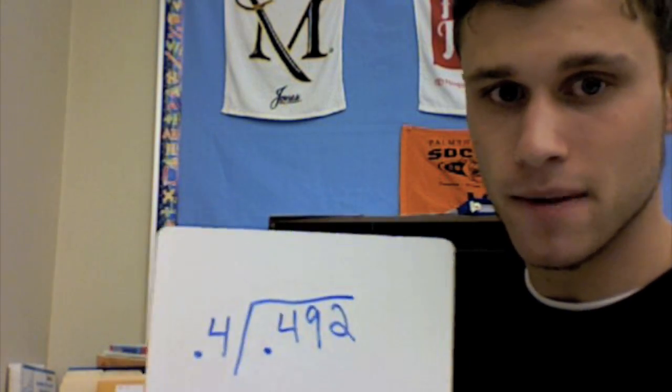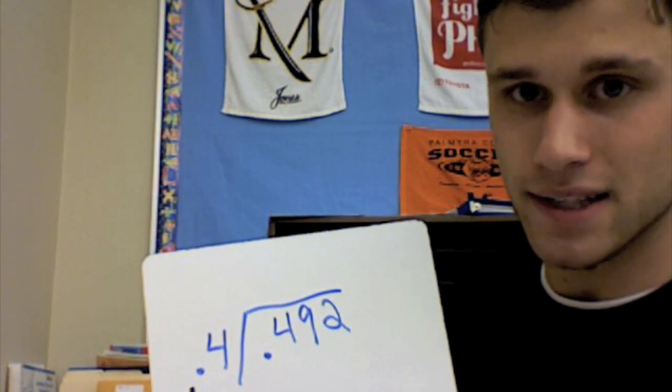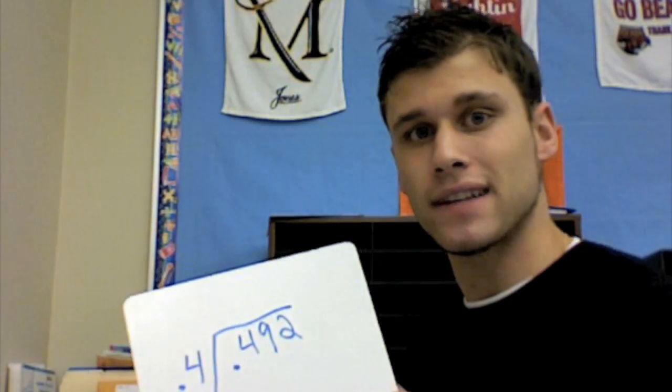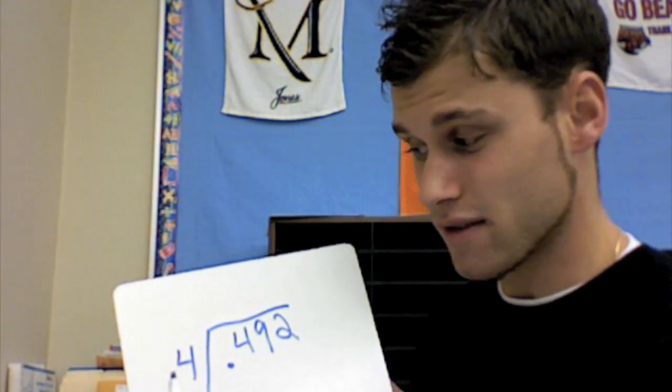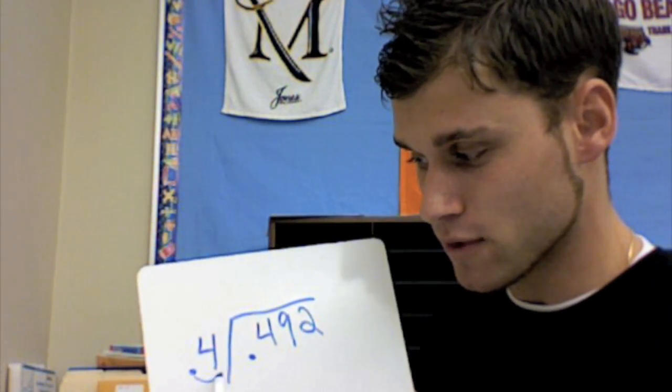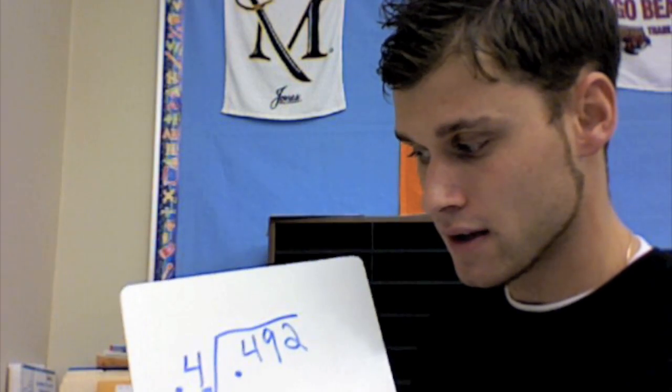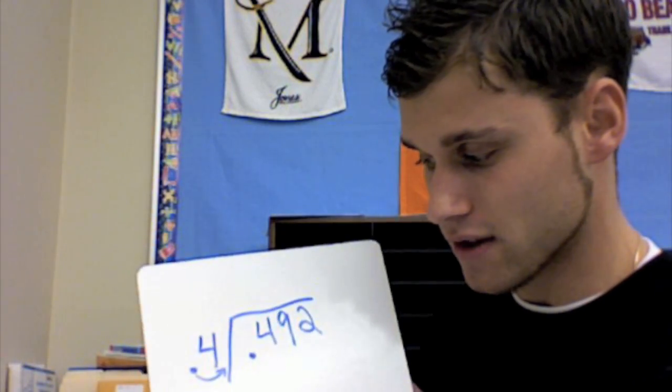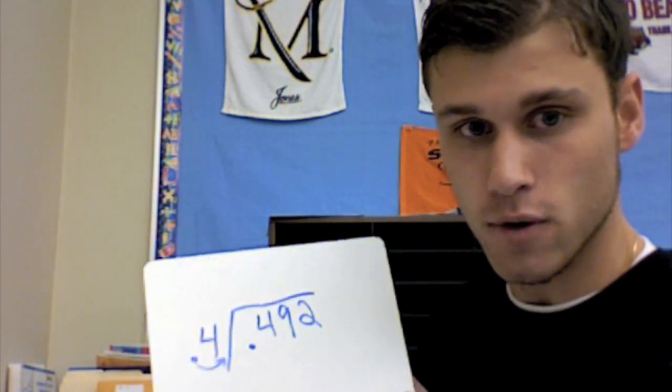All right, let's take a look at this problem. Now, we cannot divide by a decimal ever. We want to get rid of that decimal. We want a whole number. So the first thing we do is move that decimal over to the right, one place value. That's going to give us our new whole number of 4 now.